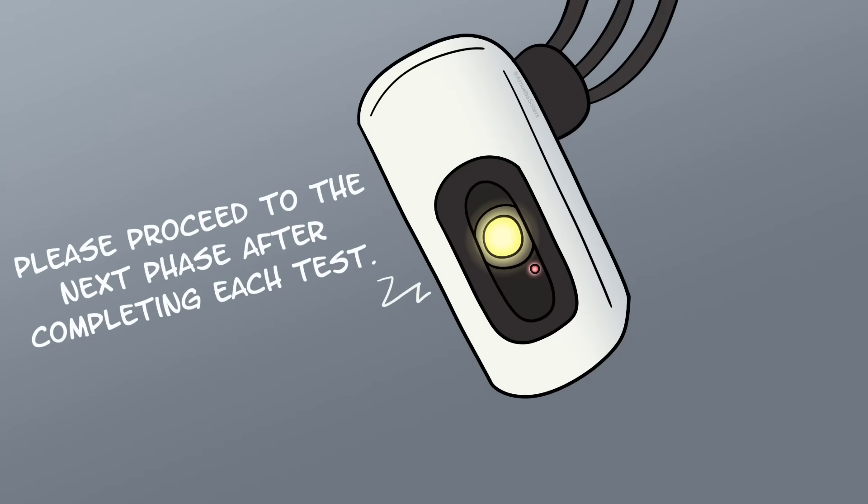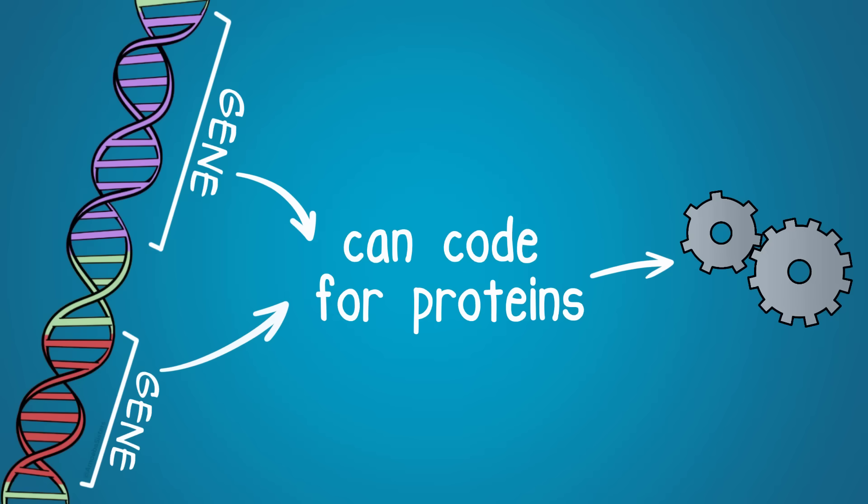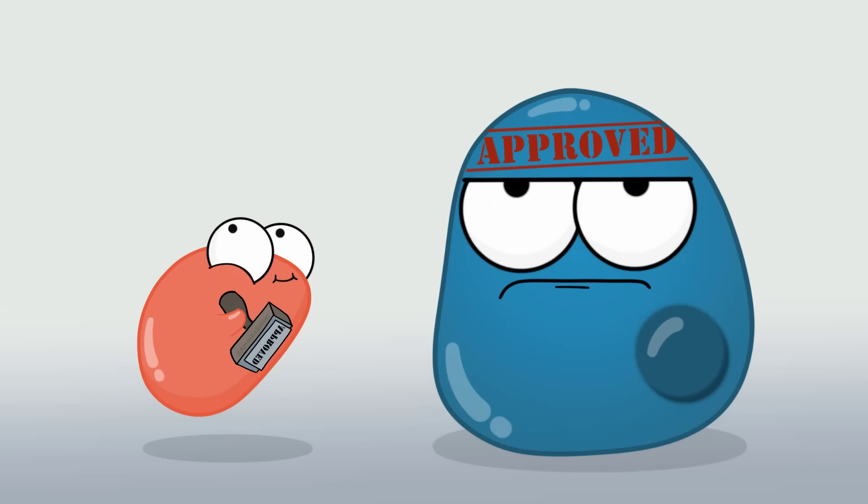So what is doing the regulating anyway? We've mentioned before that proteins are a big deal. Genes in your body can code for proteins that do an assortment of functions, and there are many proteins involved with regulating the cell cycle.